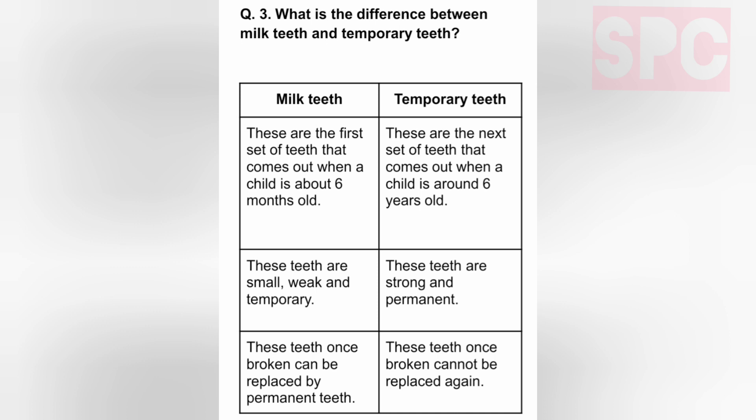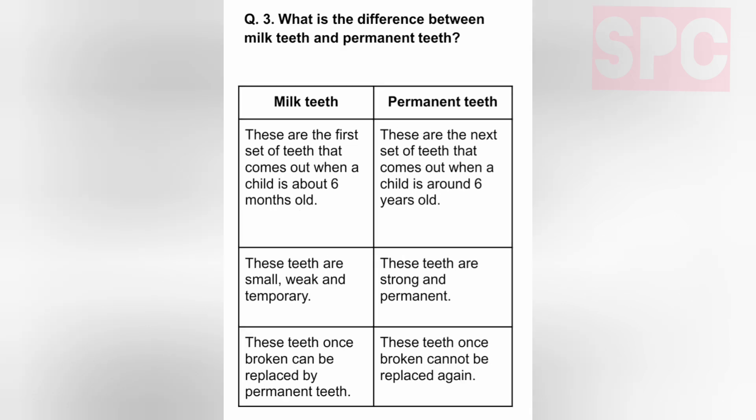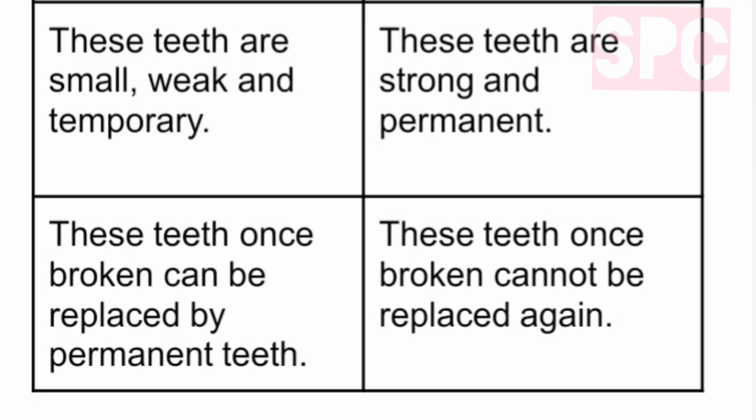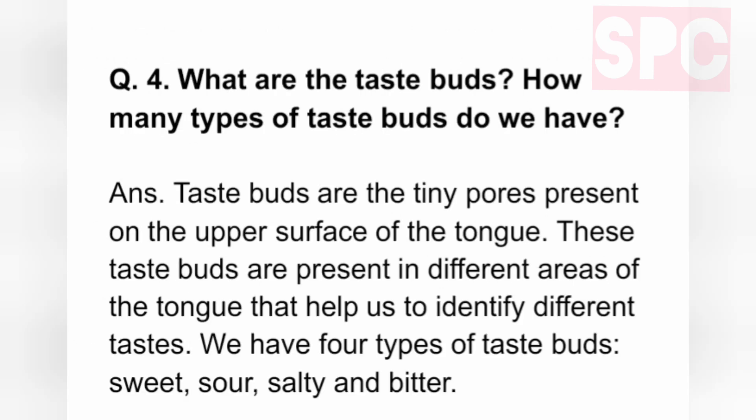Question 3: What is the difference between milk teeth and permanent teeth? First difference — Milk teeth are the first set that comes out when a child is about 6 months old; permanent teeth come out when a child is around 6 years old. Second difference — Milk teeth are small, weak, and temporary; permanent teeth are strong and permanent. Third difference — Milk teeth, once lost, are replaced by permanent teeth; permanent teeth, once broken, cannot be replaced.